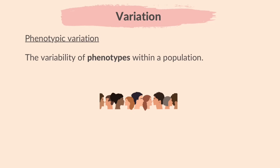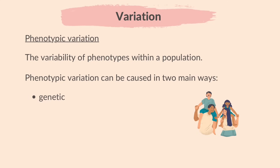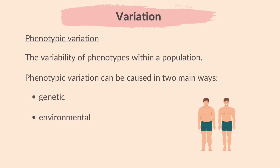Phenotypic variation is the variability of phenotypes within a population. Phenotypes are the observable features of an organism. Phenotypic variation can be caused in two main ways: it can be genetic, i.e. controlled entirely by genes, or it can be environmental, i.e. caused entirely by the environment in which the organism lives.